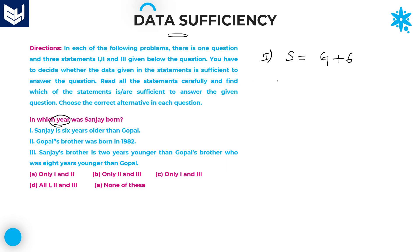By using only the first statement, you will not get the answer. Now go for the second one. The second statement says Gopal's brother was born in 1982. But we don't know about Gopal, and we don't know the difference between Gopal's brother and Gopal. So you cannot get the exact answer by using statements 1 and 2 alone.